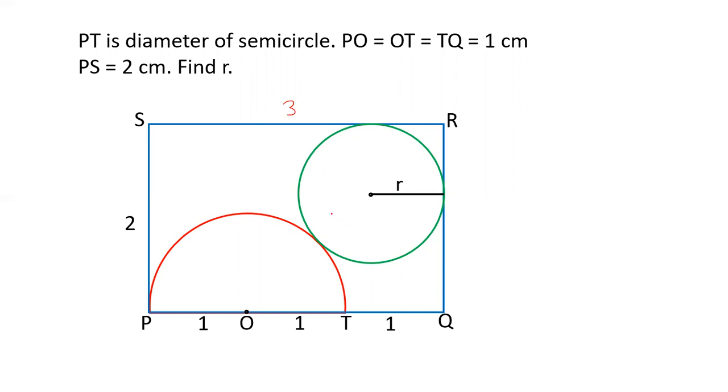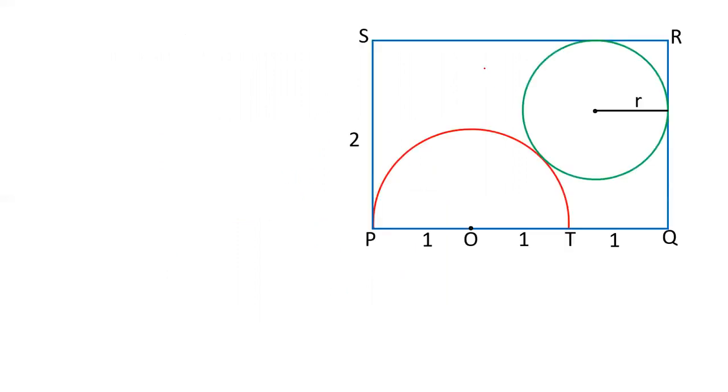So friends, let us see how to solve this question. The dimension of rectangle is 3 and 2. The semicircle is of radius 1. And there is a circle which touches the semicircle as well as the two sides of the rectangle in the corner.